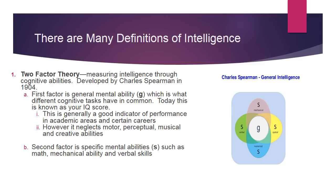G is generally a good indicator of performance in academic areas and certain careers. However, it neglects motor, perceptual, musical, and creative abilities. So it's a very limiting perspective in terms of what skill sets you bring to the table. The second factor specifically looks at those mental abilities — S — such as math, mechanical ability, and verbal skills.